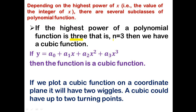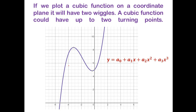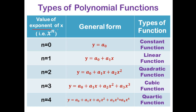If the highest power of a polynomial function is 3, we have a cubic function: y equals a₀ plus a₁x plus a₂x squared plus a₃x cubed. When plotted on a coordinate plane it will have two wiggles, and a cubic function could have up to two turning points. To summarize: if n equals 0 we have a constant function, n equals 1 gives a linear function, n equals 2 gives a quadratic function, n equals 3 gives a cubic function, and n equals 4 gives a quartic function, and so on.